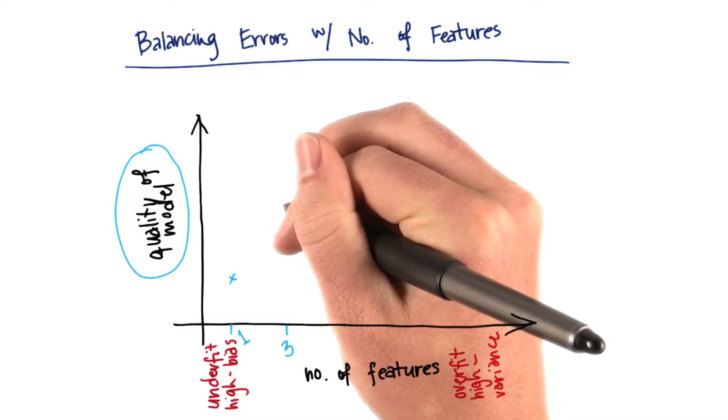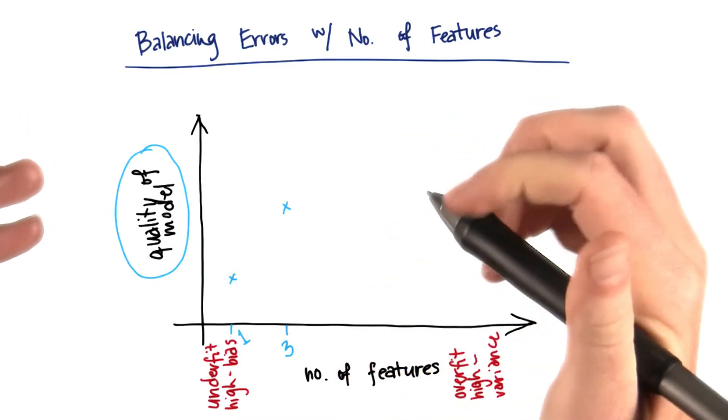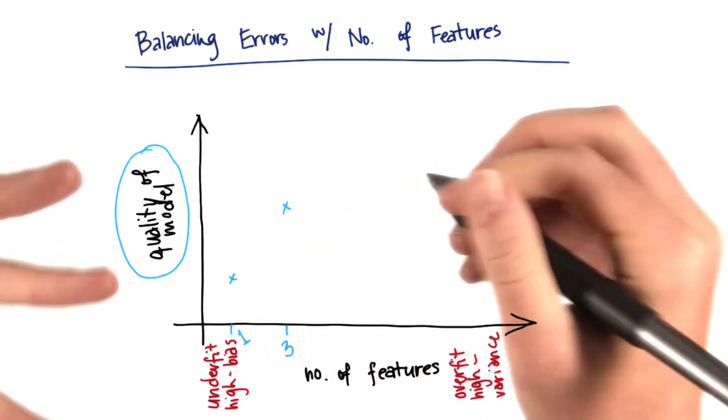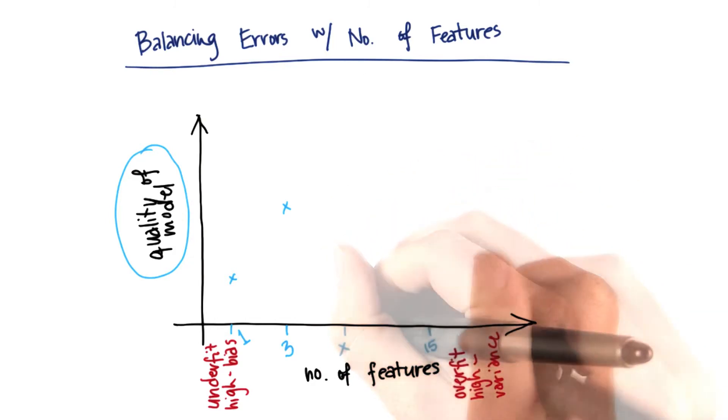Then my error is going to go down because my model is now fitting my data in a more precise way, but it's not too complex yet. I'm only using three features and I've checked each one of them. So the quality of my model has now gone up.